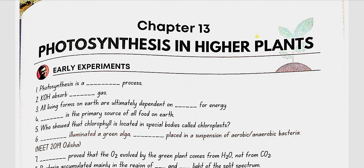Chapter 13: Photosynthesis in Higher Plants — Early Experiments. Photosynthesis is a physiochemical process. KOH absorbs CO2 gas. All living forms on Earth are ultimately dependent on sunlight for energy.